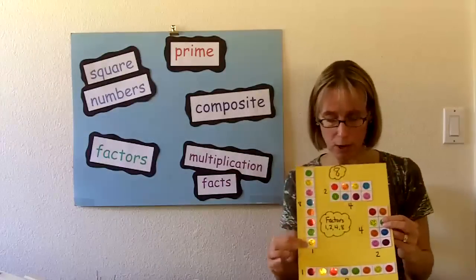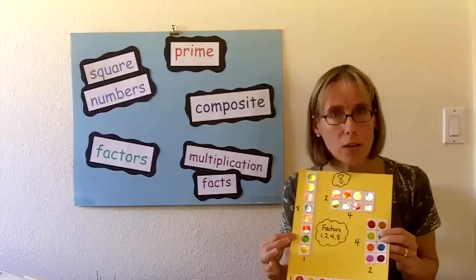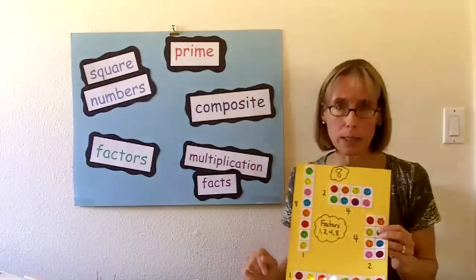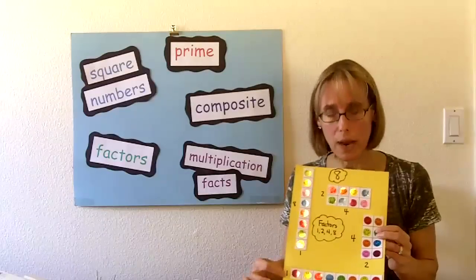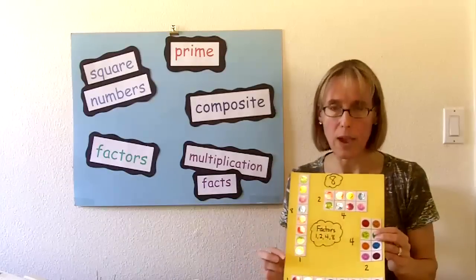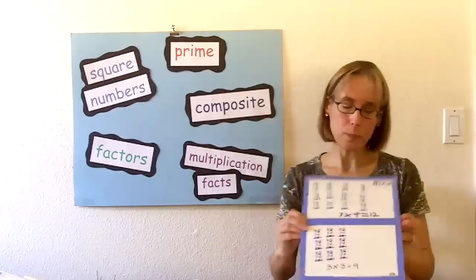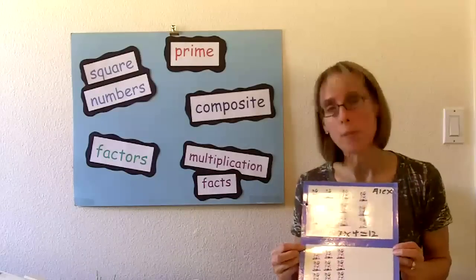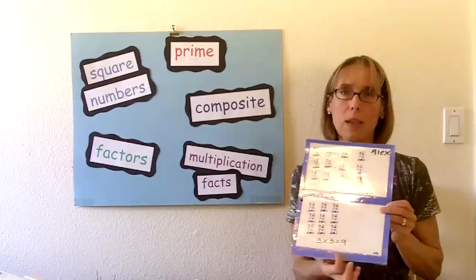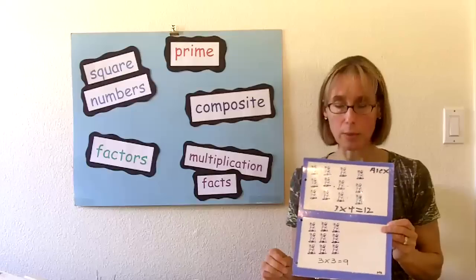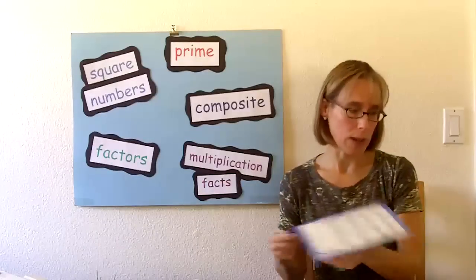Or you can have students actually create their own sheet like this, where you can see here that I've created all the different rectangles for the number eight, and then you're going to introduce them to the word factors. The numbers that you multiply together to get the answer are called factors, and then the answer is called the product, so then they would list the factors of eight on there. Another way to do that is, this third grade classroom created a multiplication book. So they created their arrays using rubber stamps, and then you can see down here that they have put the corresponding multiplication fact on there. They gathered them all together and created the really great classroom multiplication fact book, so that was really fun.